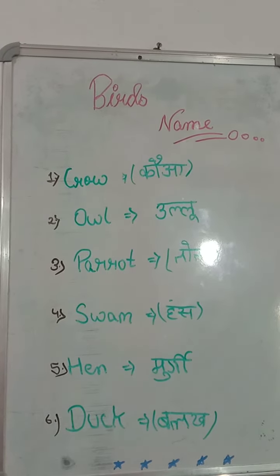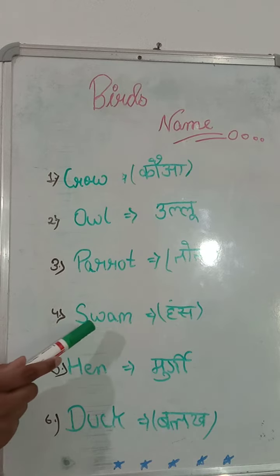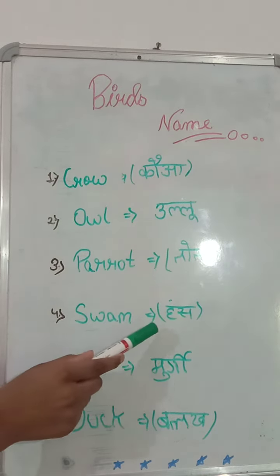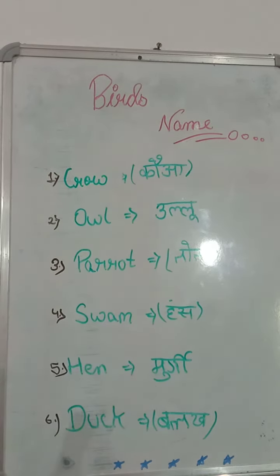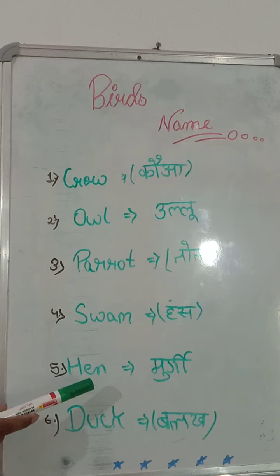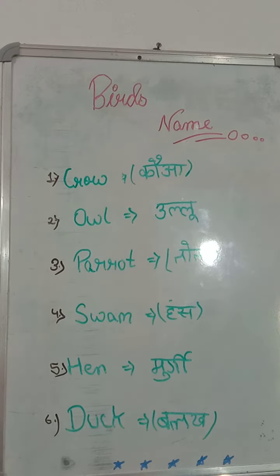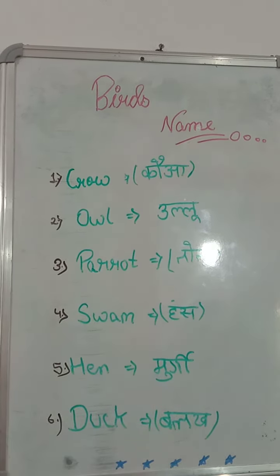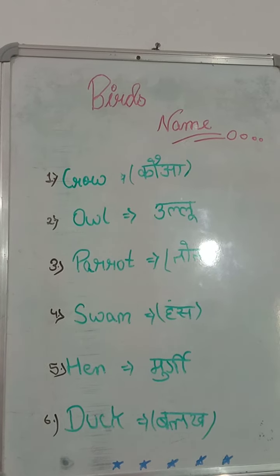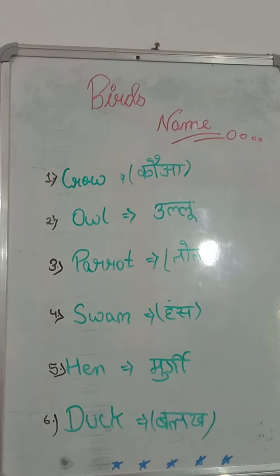The fourth bird is the Swan — S, W, A, N. In Hindi, we call the Swan 'Hans'.